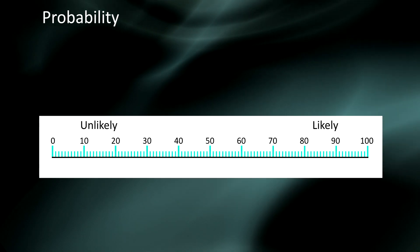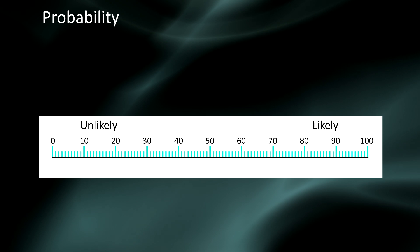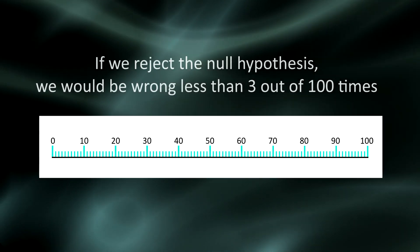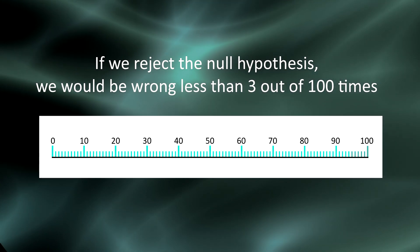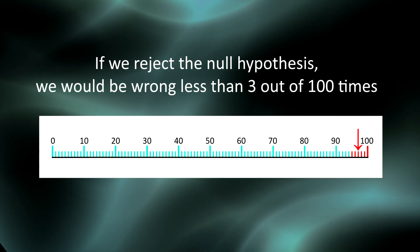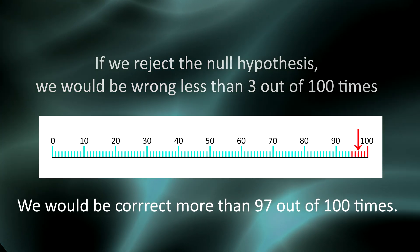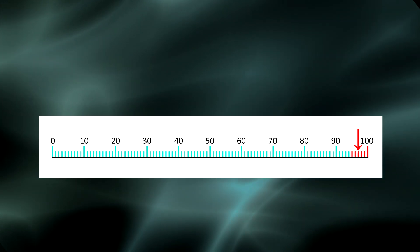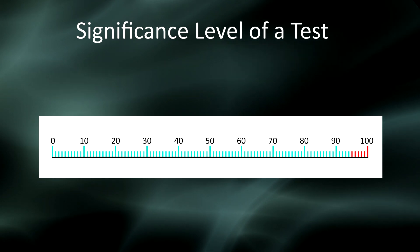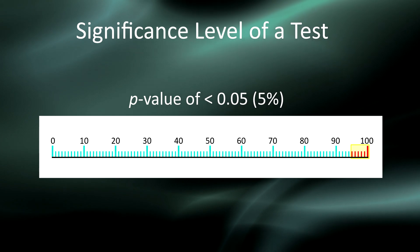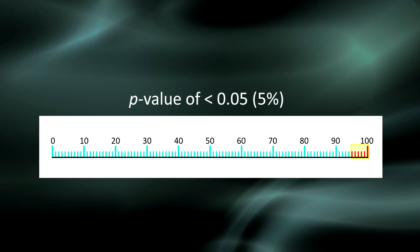The p-value of this revised scenario is 0.0285, obviously less than 0.05. This means that the probability that we would get a difference of this size in a random sample of 1,706 participants is less than 3%. If we reject the null hypothesis and say that there is a difference between the average number of cigarettes smoked per month among young adults with and without depression, we would be wrong fewer than 3 out of 100 times — we'd be correct more than 97% of the time. Based on the standards of science, this is a level of certainty that gives us confidence in saying that there is a significant association between smoking and depression among current young adult smokers.